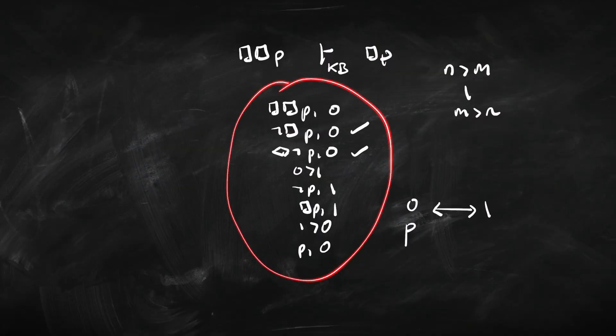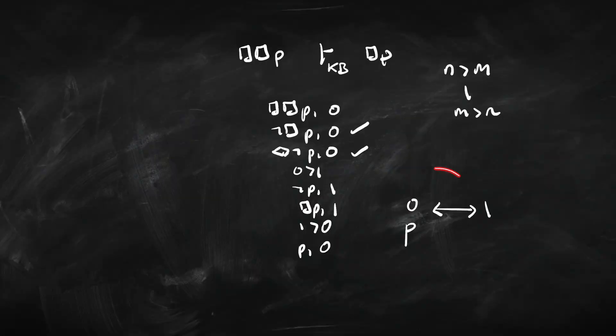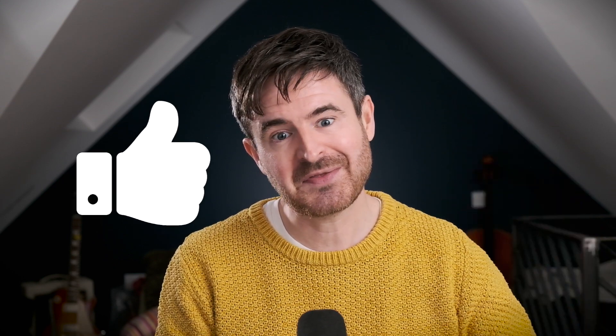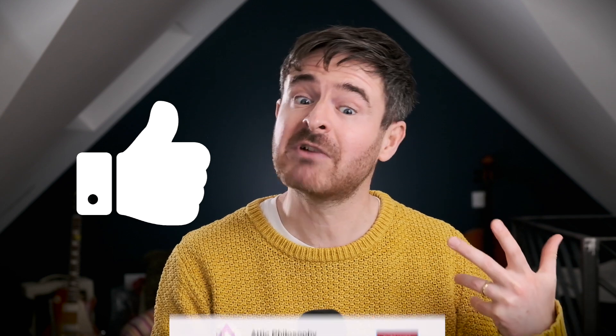By doing a KB tree test and getting a finished open branch, we can build a countermodel to the inference. That is it for today. I hope you found this useful. If you did, give this video a thumbs up and subscribe to the channel. Coming up next time, we are going to be having a look at proof trees for intuitionistic logic.